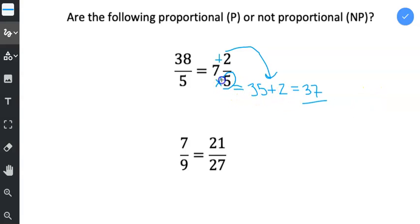That becomes my numerator of my improper fraction. Then the denominator stays the same, and it's a 5. So let's see, is 37 fifths equal to 38 fifths? And it's not.